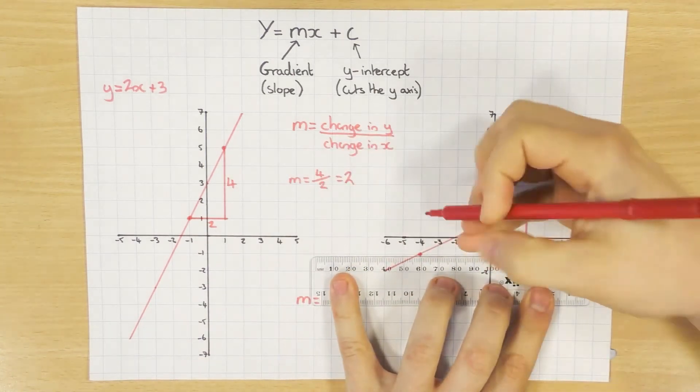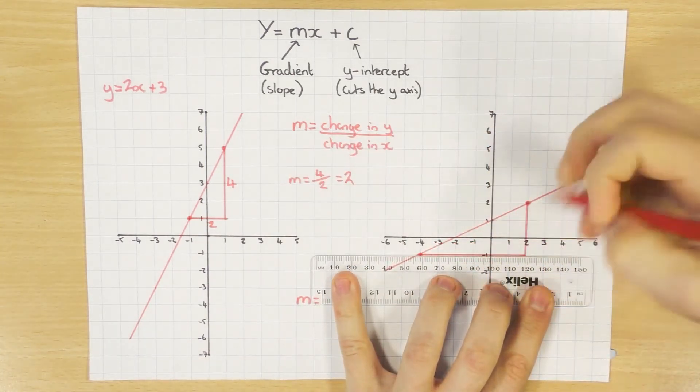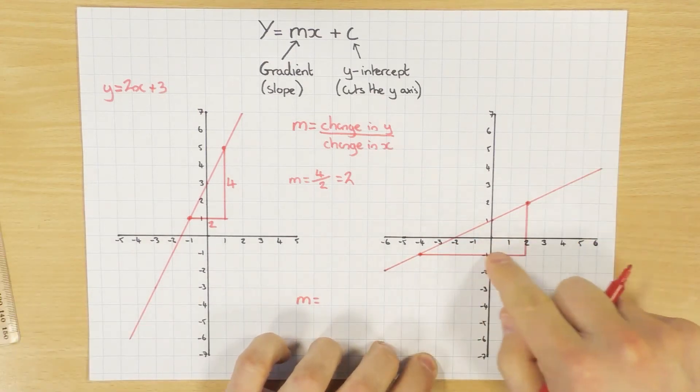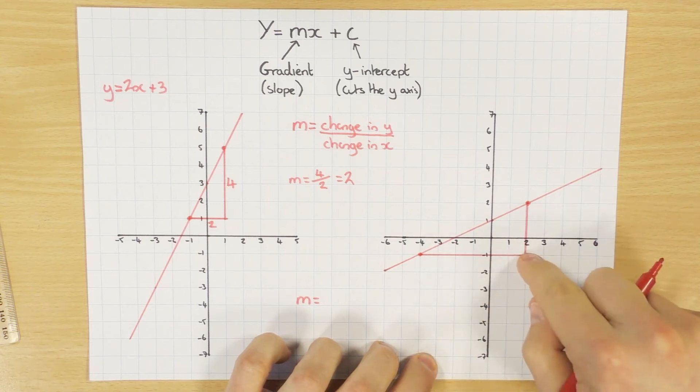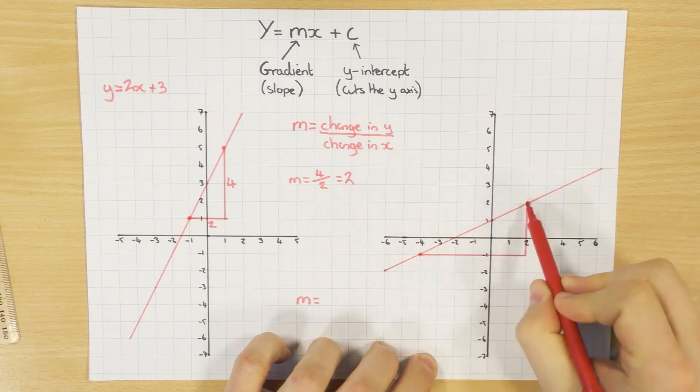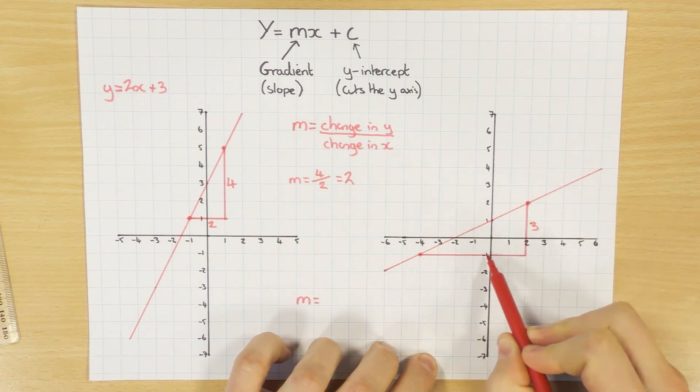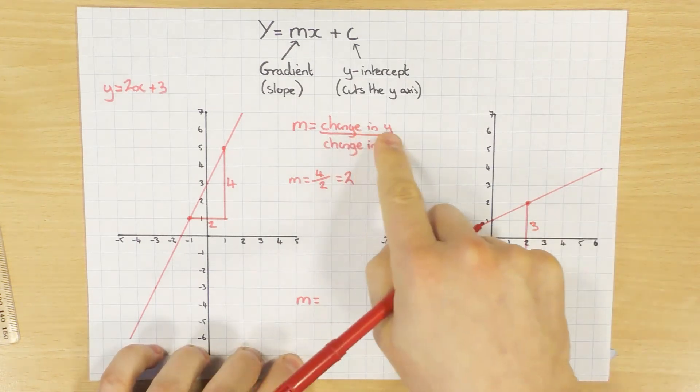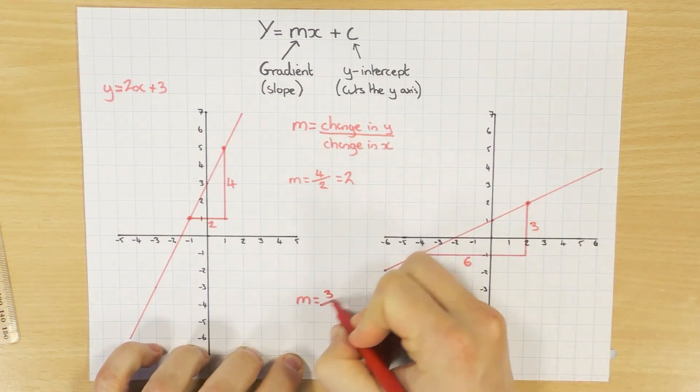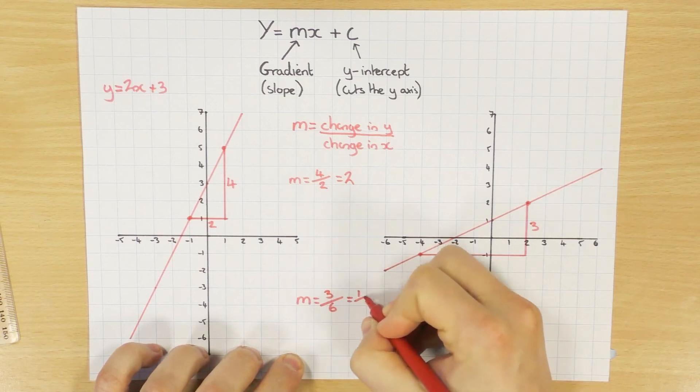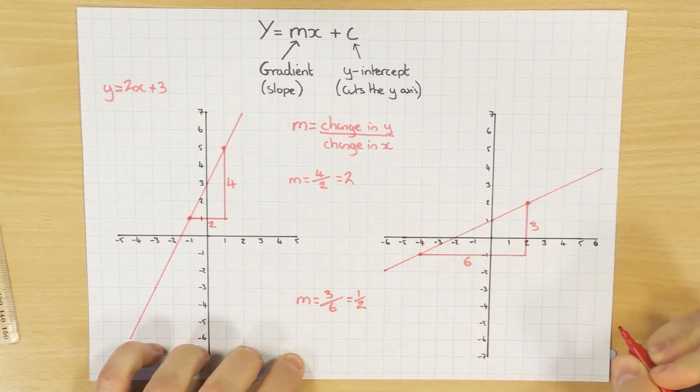Then I'm going to draw my triangle. Like so. And from the left coordinate to the right coordinate, what is my change in y? Well, I've gone 1, 2, 3 up. And what's my change in x? Well, from here to here, I've gone 1, 2, 3, 4, 5, 6. So I put that into our formula. What's the change in y? Well, that was 3. Divided by the change in x, which is 6. And again, you can simplify that. It's just a fraction. So 3 over 6 is the same as 1 half if you divide both top and bottom by 3.